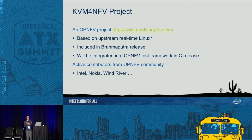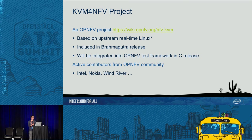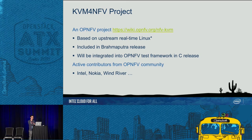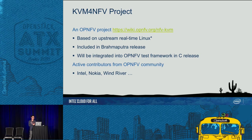The KVM4NFV project is based on the upstream real-time Linux kernel with carefully tuned kernel configuration to achieve low latency. There are also patches being pushed upstream to further reduce latency — for example, several enhancements to the KVM hypervisor and VFIO. KVM4NFV has been included in the B-release of OPNFV. The project has active contributors from the OPNFV community — Intel is a major player, Nokia contributed a lot, and Wind River also contributed.